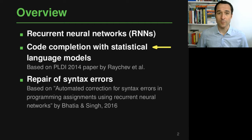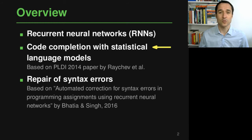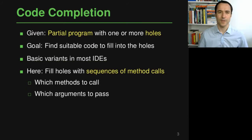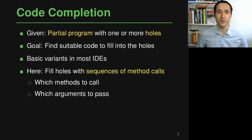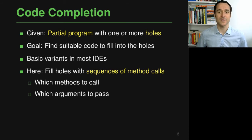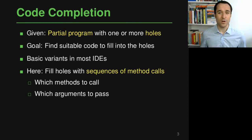Most of the things we talk about in this course are based on papers. This is actually one of the earlier papers in this space, appearing at PLDI 2014. The concrete application that RNNs are used for here is code completion. Given a partial program in which some pieces are missing, the goal is to find code to fill in these missing pieces — your program has holes and a model predicts what to fill into them.